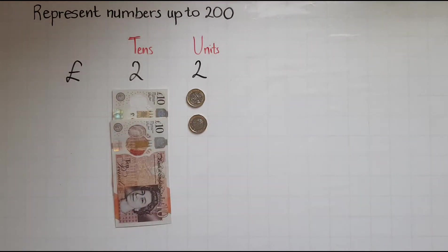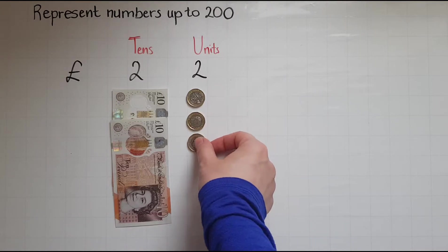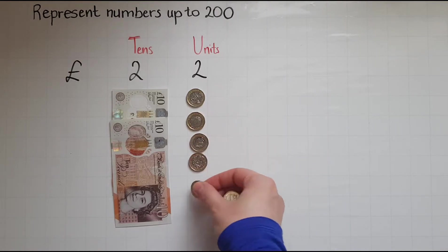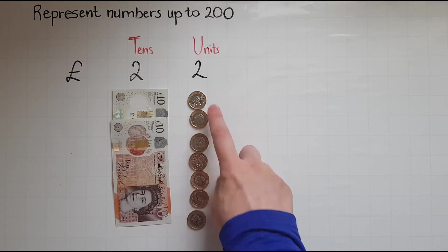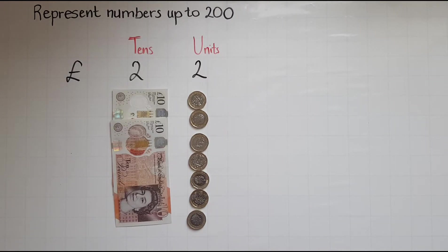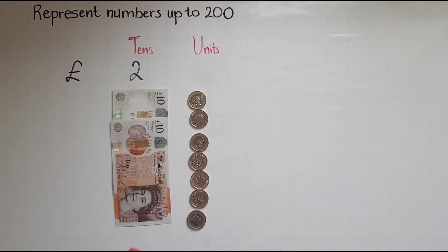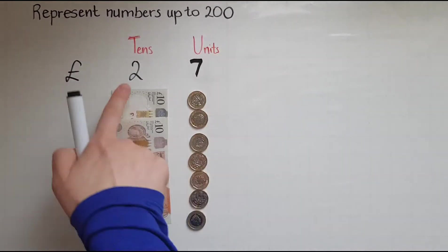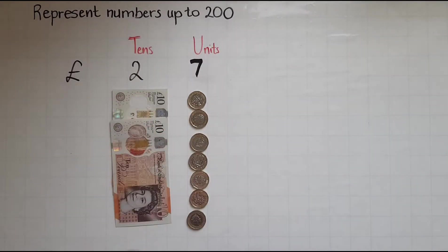So what would we do if we had a few more pounds? And let's say I've got this many more. Here we go. 2, 3, 4, 5, 6, 7. So that means that I need to change the two, this two, to make it a 7. Do I change this two over here? No I don't because I haven't added any 10 pound notes.